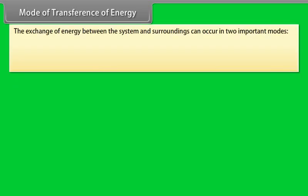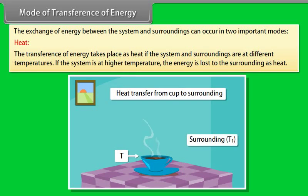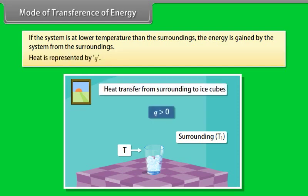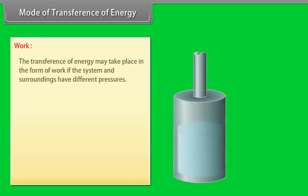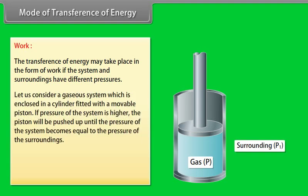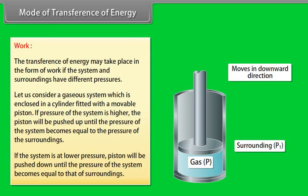The exchange of energy between the system and surroundings can occur in two important modes. Heat: transference of energy takes place as heat if the system and surroundings are at different temperatures. If the system is at higher temperature, energy is lost to the surroundings. If the system is at lower temperature, energy is gained from the surroundings. Heat is represented by Q. Work: transference of energy may take place as work if the system and surroundings have different pressures, such as a gaseous system in a cylinder with a movable piston that moves until pressures equalize.